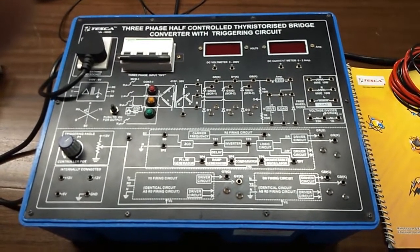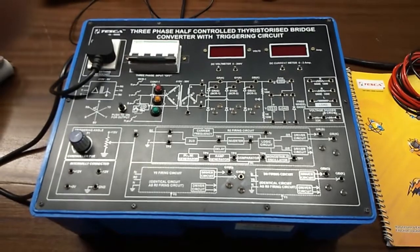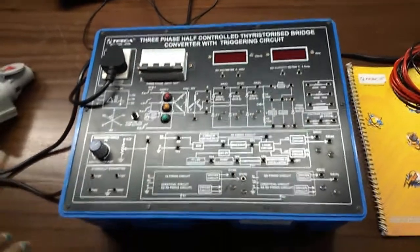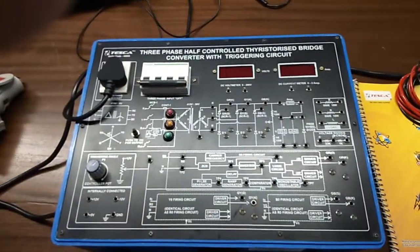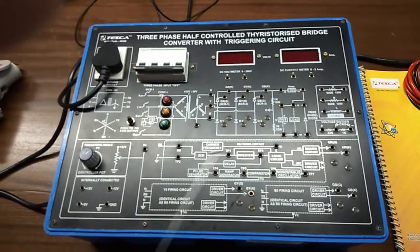Today, we are going to show you our 3 phase half controlled thyristor bridge converter with triggering circuit. Order code is 46558. This is the trainer kit.